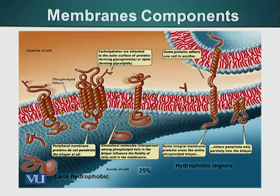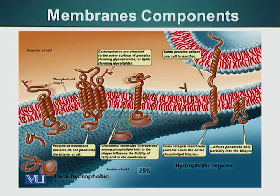You will also notice that there are little yellow entities embedded in the lipid bilayer — that is cholesterol. Cholesterol is about 25% in many cells. Cholesterol keeps the lipid bilayer fluid, and fluidity of the lipid bilayer is very important. We will see why that is later in this module.